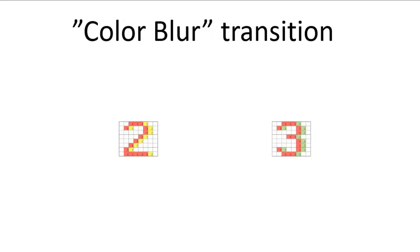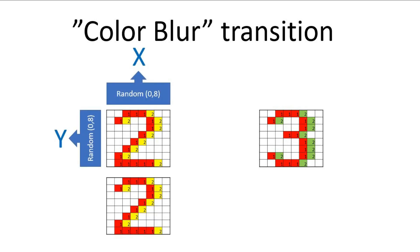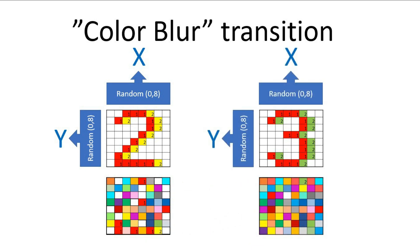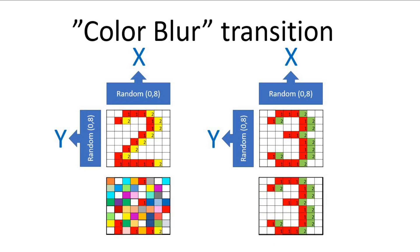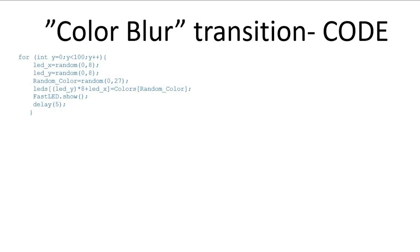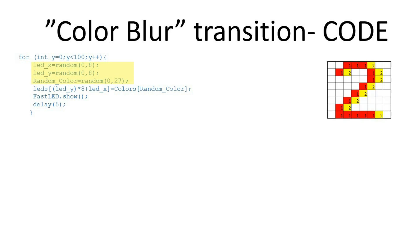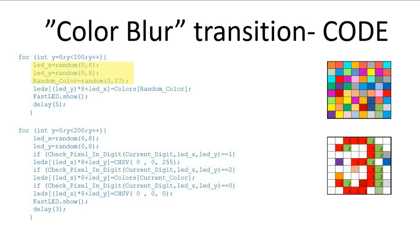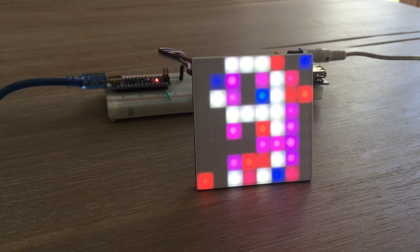Moving on to more complex transitions. Here, after displaying a digit, we randomly select a pixel and change its color to a random value. After repeating this step 100 times, the digit disappears and the matrix is filled with mixed color pixels. Then we repeat a similar action, but now instead of generating a random color, we randomly select a pixel and use the checkPixelInDigit function to fill it with the pixel belonging to the digit we are transitioning to. Here are the two code segments responsible for both stages of the transition, and this is how it looks displayed on the matrix.